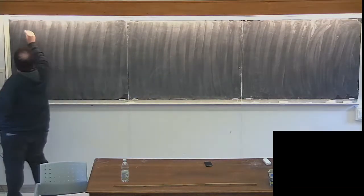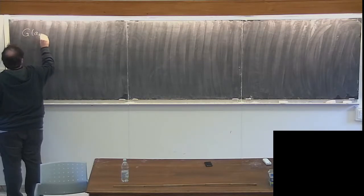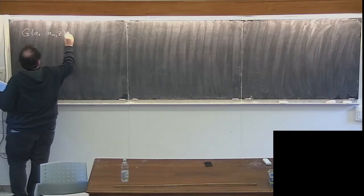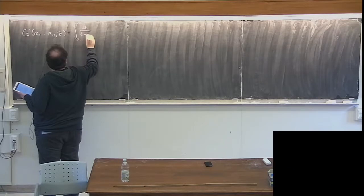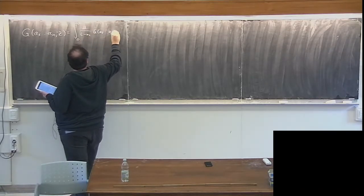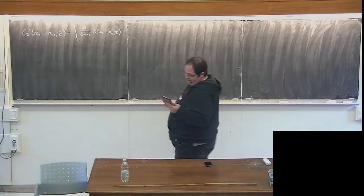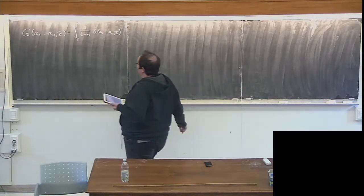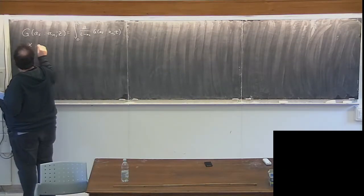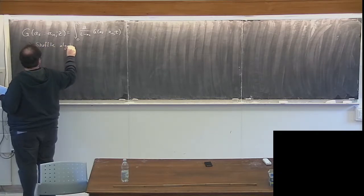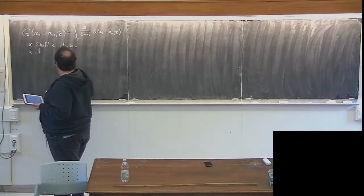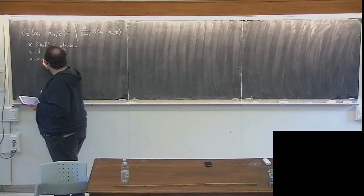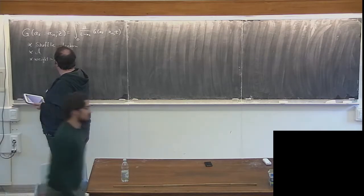This morning we started looking at polylogarithms, which are iterated integrals defined in a specific way. We said several things: they form a shuffle algebra, and we denoted this algebra by A, and we called the weight the number of integrations.